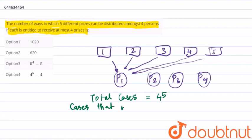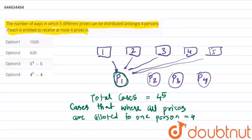Where all prizes are allotted to one person is four. Here there are cases that P1 gets all the five prizes, likewise P2 gets all the five prizes, P3 and P4.